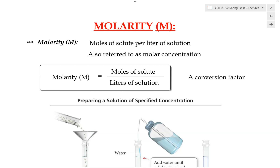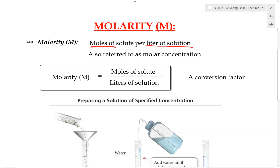So first, what is molarity and why do we use it? Molarity is the most powerful and most common method used in chemistry and science to express the concentration of a solution. When we use molarity, we express the amount of solute in terms of moles, and the amount of solution in liters. Molarity is also referred to as molar concentration.